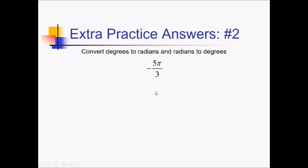For this problem, we're trying to convert negative 5 pi over 3 into degrees. We're going to multiply by 180 over pi. If we do 180 divided by 3, that's going to be 60; times negative 5 is going to be negative 300. The pi's are canceling, so we end up with negative 300 degrees.